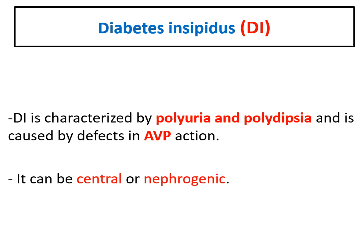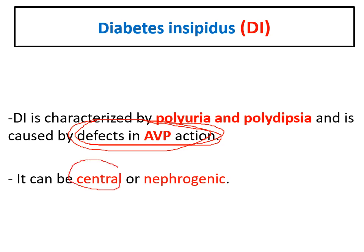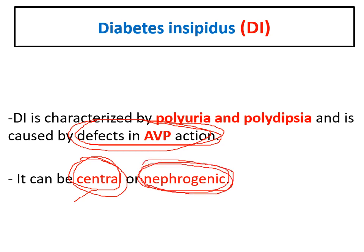Diabetes insipidus is the disease caused by a defect or abnormality in AVP action — either due to abnormality in synthesis from the hypothalamus or brain, called central diabetes insipidus, or when secretion is adequate but AVP cannot act in the kidney due to renal resistance, called nephrogenic diabetes insipidus. In both conditions, the ADH does not act appropriately, water is lost in the urine, and the main clinical features are severe polyuria and polydipsia.